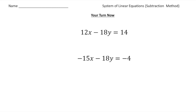Welcome back. Let's see how you did with this system problem. We have 12x minus 18y equals 14, and negative 15x minus 18y equals negative 4. Looking at the y coefficients, we have negative 18 and negative 18.